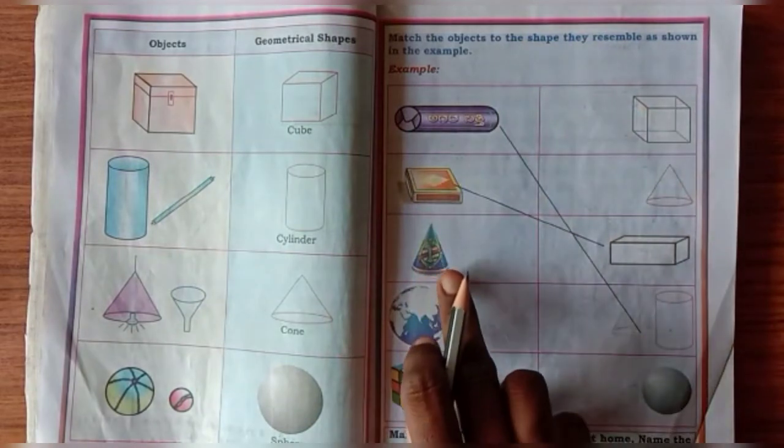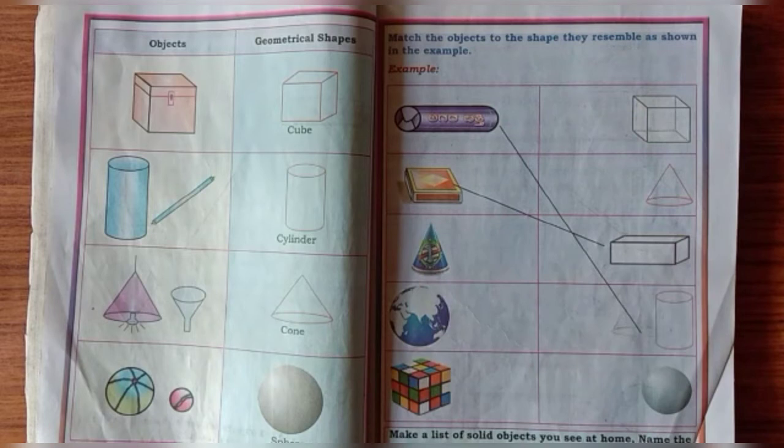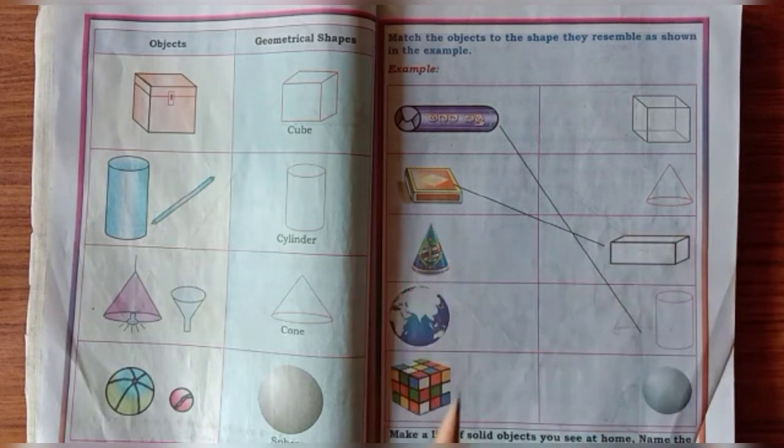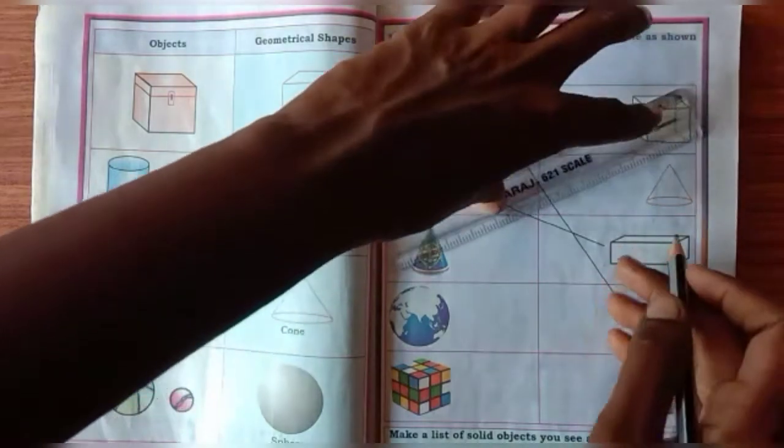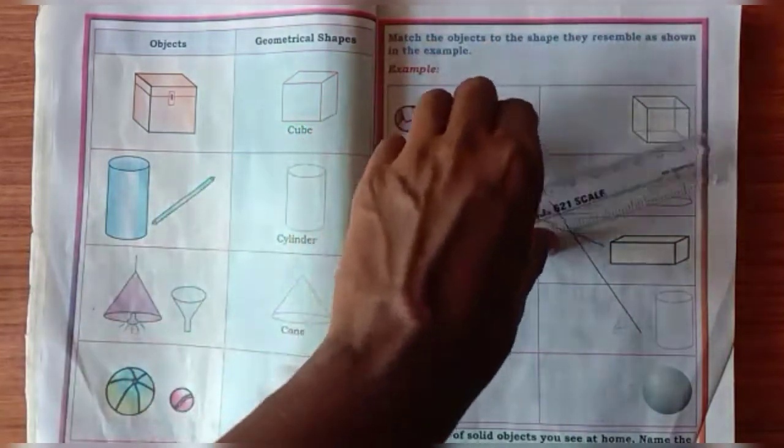Take a scale and draw the lines. Next, third one. This object with geometrical shape here, you have to correctly match it.